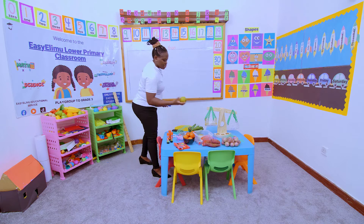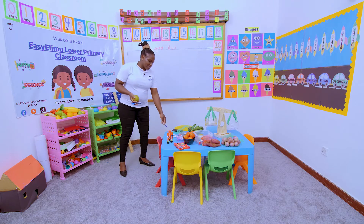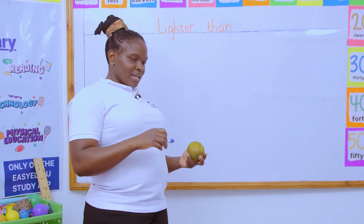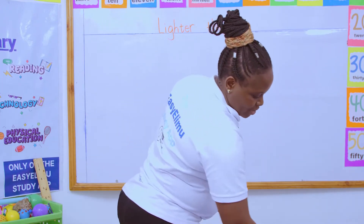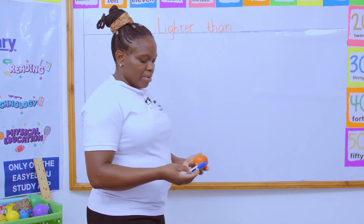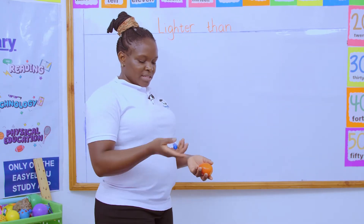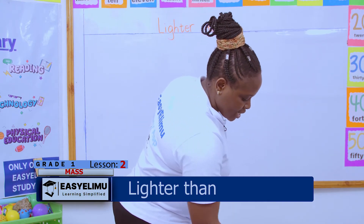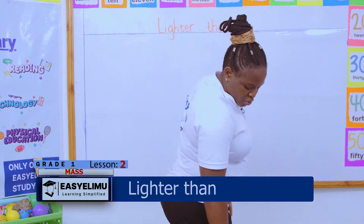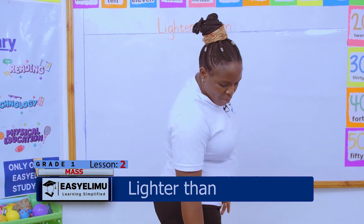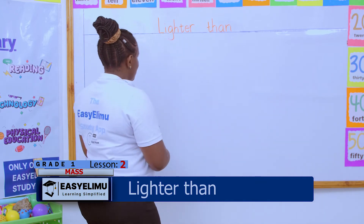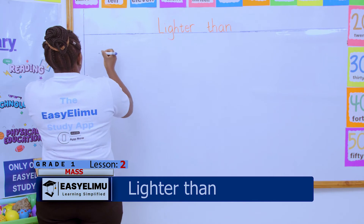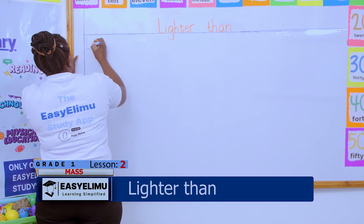If I compare this orange and this pen, what will I say? The pen is lighter than the orange. If I look at the tomato and the pen, what can you say? The pen is still lighter than the tomato. So when you talk about 'lighter than,' what does it mean? Lighter means less or little.